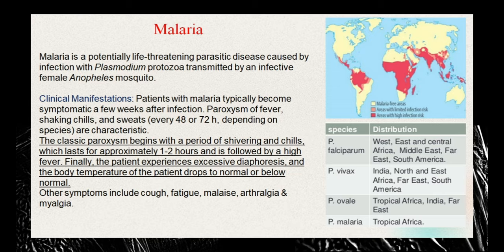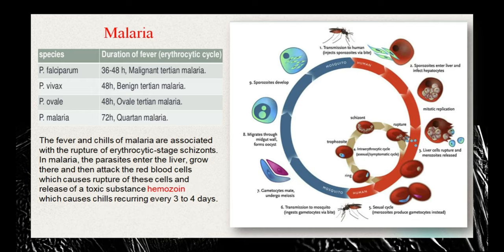Other symptoms include cough, fatigue, malaise, arthralgia — inflammation or pain in the joints — and myalgia, which is pain in the muscles. The reason these paroxysms occur lies in the life cycle of malaria. The Plasmodium has part of its life cycle in the mosquito and part in the human. The fever and chills are associated with the rupture of erythrocytic stage schizonts.